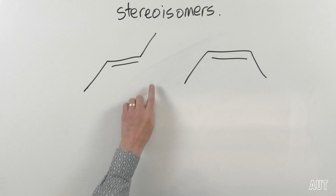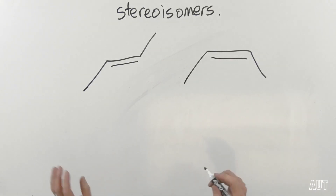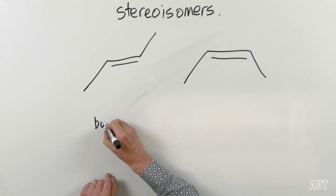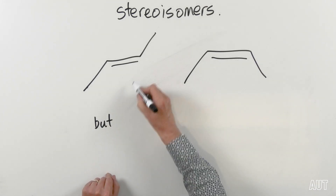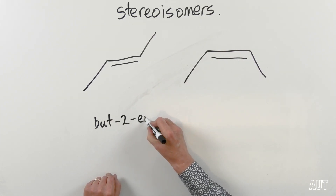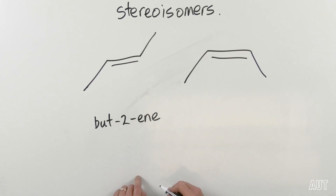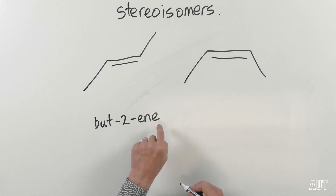So what are these two molecules? We've already named this molecule in a previous video, but we left out one very important part because we hadn't got to the isomers bit yet. We called this — remember this is a C4, so it's bute — and then the locant is two, and the infix is 'en' and the suffix is 'e'. Bute-2-ene.